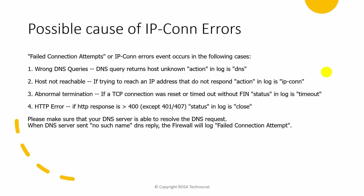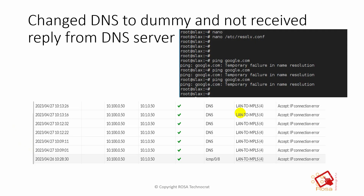The fourth cause is an HTTP error — if the HTTP response code is greater than 400, the log will show it as 'close.' So within IP connection error you have different message types: DNS error (deny DNS or timeout), IP connection error (accept or deny), timeout, and close. These four are the possible causes — wrong DNS response, host not reachable, some device on the path denying traffic, or an HTTP error response.